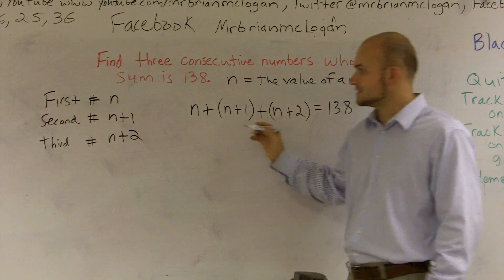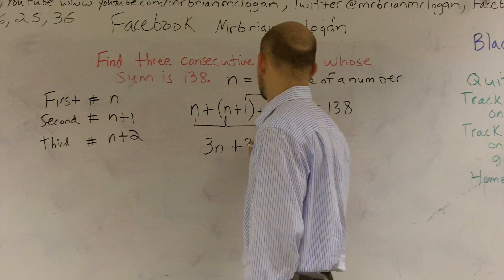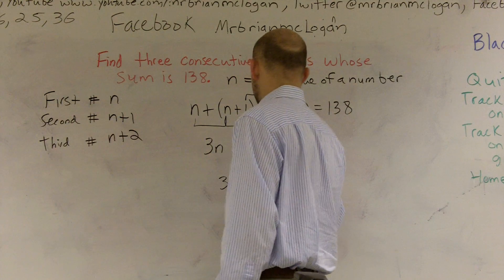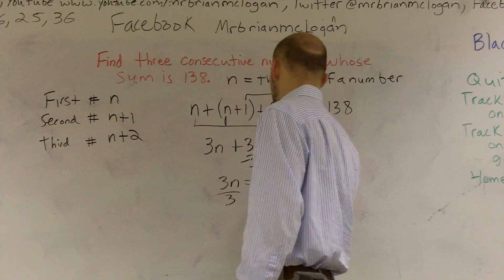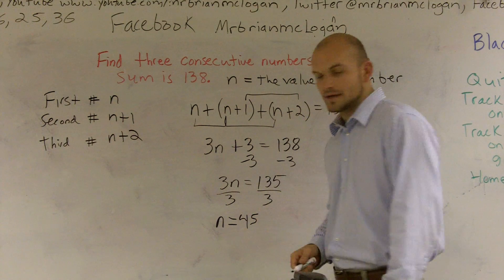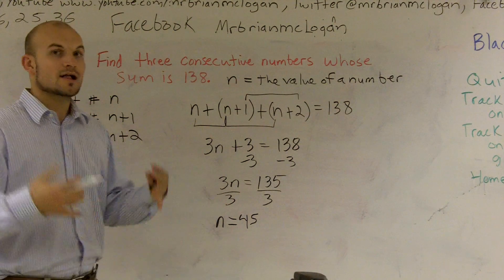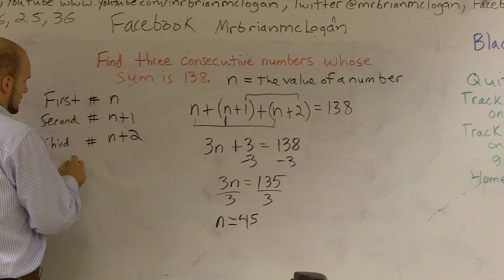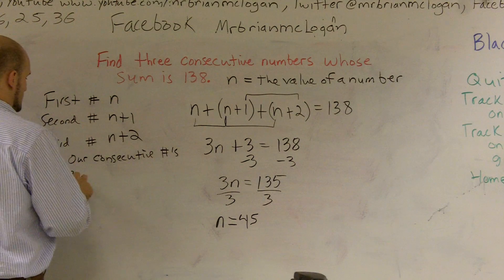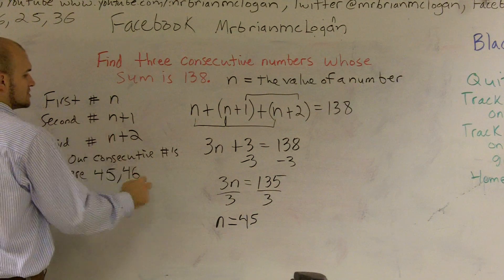I can now get rid of the parentheses and combine like terms. Adding the n's gives me 3n, and adding the numbers gives me 3, so I have 3n plus 3 equals 138. This is a two-step equation. I subtract 3 to get 3n equals 135, then divide both sides by 3 to get n equals 45. Be careful — we're not just looking for n. Our three consecutive numbers are 45, 46 (which is 45 plus 1), and 47 (which is 45 plus 2).